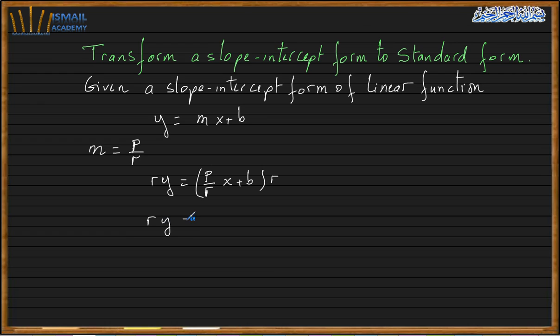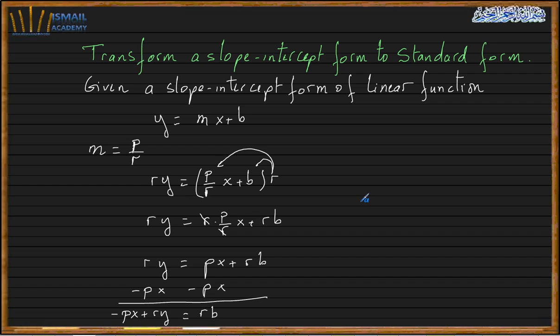So we'll have ry equal, then distribute, px plus rb. Then minus px both sides. So we get minus px plus ry equals rb.